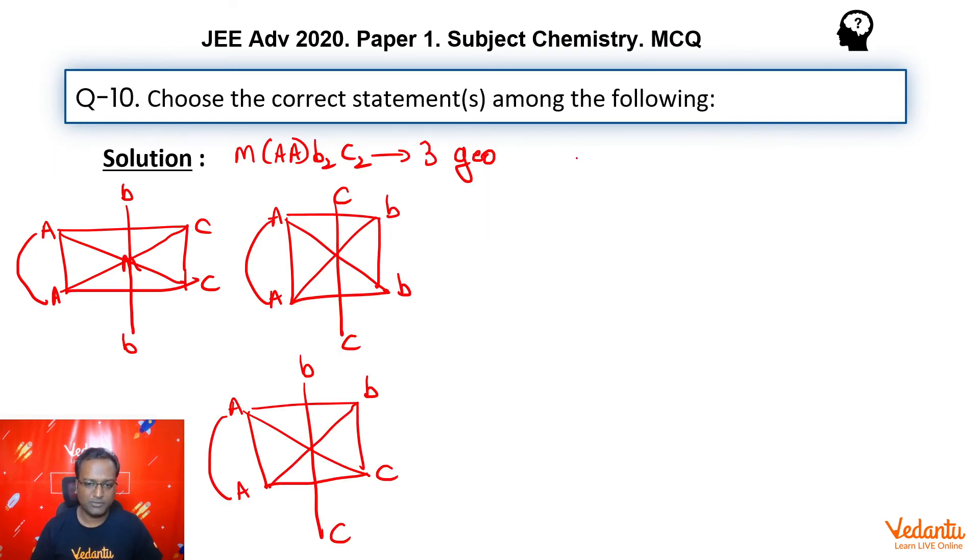Now, the next compound we were solving here. So, let's talk about here itself. So, cobalt, ethylene diamine, ammonia taken twice, chlorine taken twice and here we have a plus sign given. So, cobalt 3+ that is 4S0, 3D6 system. And as you can see,